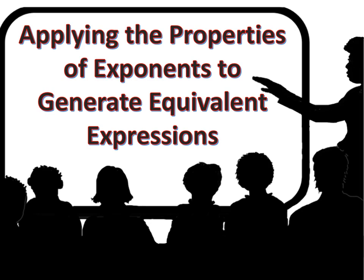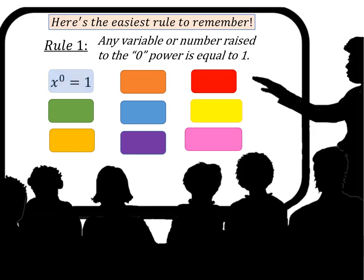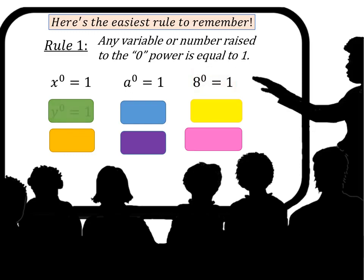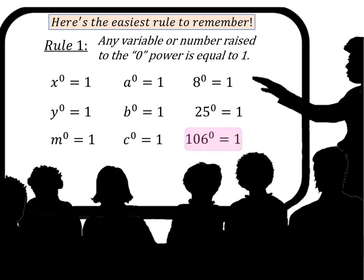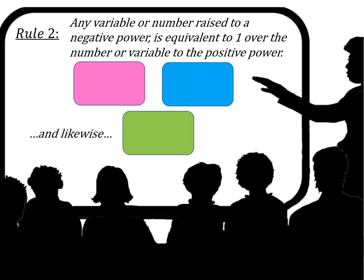Applying the properties of exponents to generate equivalent expressions. Here's the easiest rule to remember: any variable or number raised to the zero power is equal to 1. In this lesson, 'power' and 'exponent' are used interchangeably. Notice that x, y, b, 25, m, c, and 106 — all raised to the zero power — are equal to 1. Let's not confuse that with degrees.